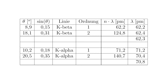For theta equal to 10.2 degrees, sinus theta is 0.18 and the k-alpha line of the first order gives n times lambda equal to 71.2 picometers, which is also the wavelength. At theta equal to 20.5 degrees, sinus theta is 0.35 and the k-alpha line in the second order gives n times lambda equal to 140.7 picometers, resulting in a wavelength of 70.4 picometers. This gives the average wavelength for the k-alpha line at 70.8 picometers.